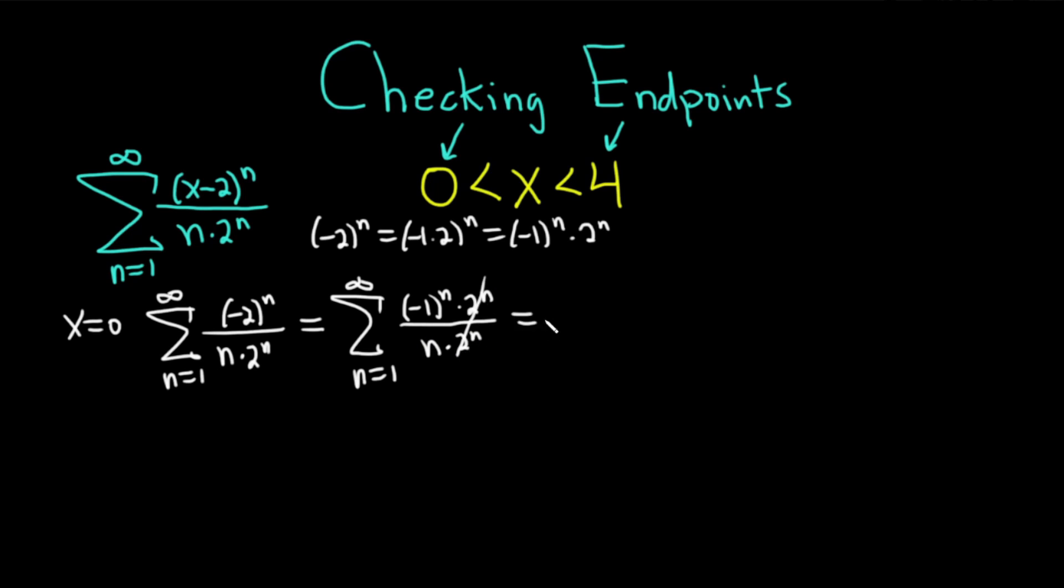So the numerator becomes minus 1 to the n over n 2 to the n. These cancel, so this equals the infinite sum as n runs from 1 to infinity of negative 1 to the n over n. And this converges by the alternating series test.